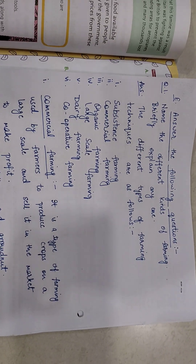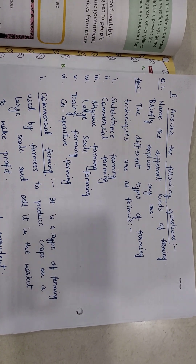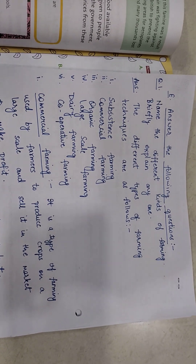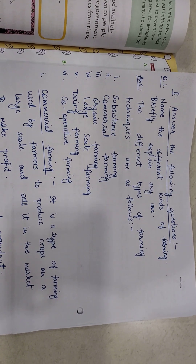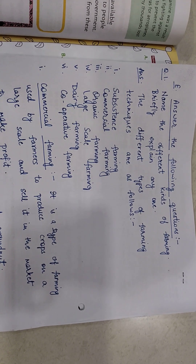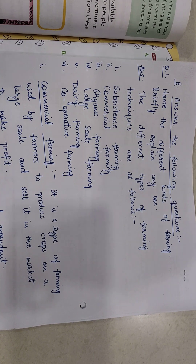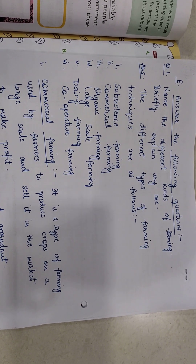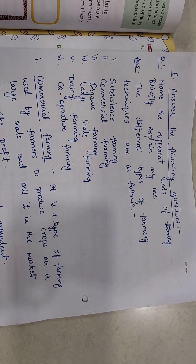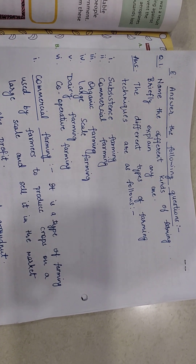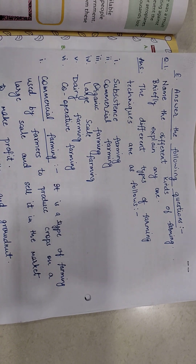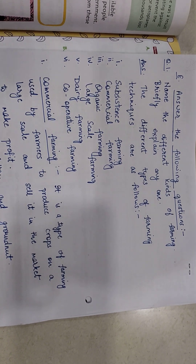Answer the following questions. Question number 1: name the different kinds of farming and briefly explain any one. The different types of farming techniques are: first, subsistence farming; second, commercial farming; third, organic farming; fourth, large scale farming; fifth, dairy farming; sixth, cooperative farming.